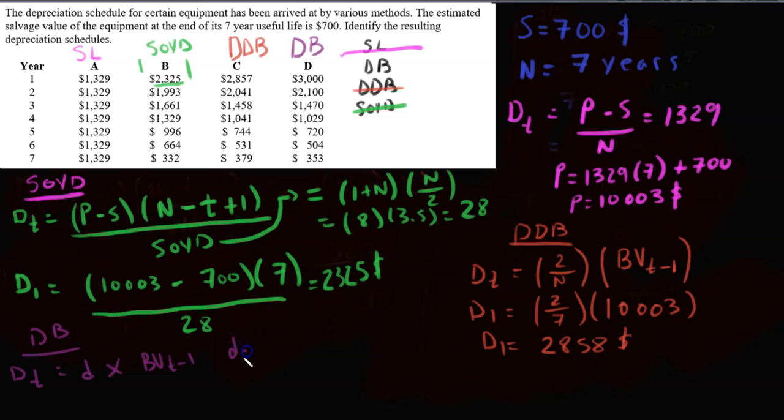To find depreciation rate, you can find the formula in textbooks. It's d equals 1 minus the nth root of S over P, where N is your useful life, so 1 minus the 7th root of 700 over 10,003. The way I like to do this usually is just take out the root, which ends up being 700 over 10,003 to the power of 1 over 7. And this gives us 0.316.